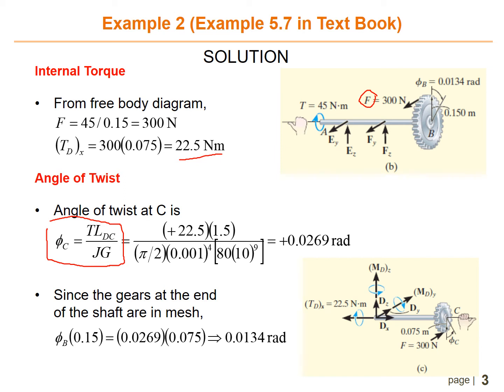Since the gears at the end of the shaft are in mesh, theta B times 0.15 equals 0.0269 times 0.075, and then you can get theta B is 0.0134 radians.